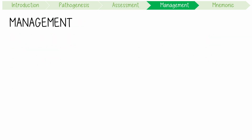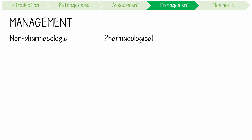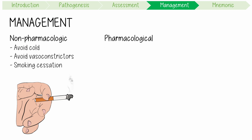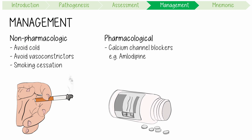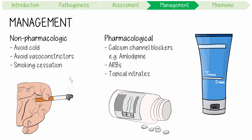The management of Raynaud's requires non-pharmacological and pharmacological measures. Non-pharmacological measures include advice about avoidance of cold exposure, avoidance of vasoconstricting drugs, and smoking cessation advice and support. Pharmacologic interventions include calcium channel blockers like amlodipine, which can be used daily as a first-line option. Otherwise, angiotensin 2 receptor blockers, or ARBs, can be used. Another option is a topical nitrate applied with an ointment, which is more useful for patients with a single severely affected digit.